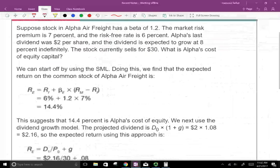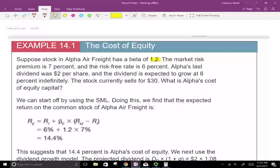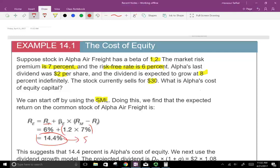So suppose stock in Alpha Air Freight had a beta of 1.2. The market premium is 7% and the risk-free rate is 6%. Alpha's last dividend was $2, and the dividend is expected to grow at 8% indefinitely. The stock currently sells for $30. So what is Alpha's cost of capital? Well, if we look at the SML approach, we're going to take the risk-free rate, 6%, plus beta times the premium. Beta times the premium, plus the 6% will give us, under the SML, the cost of equity is 14.4% for Alpha Air Freight.